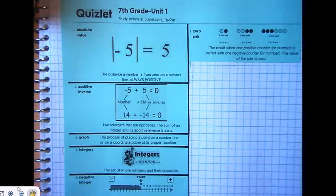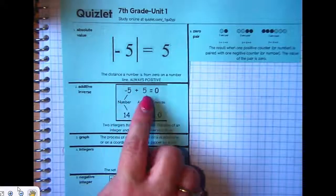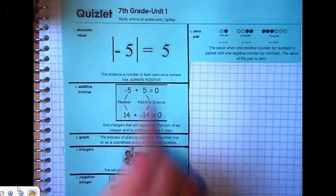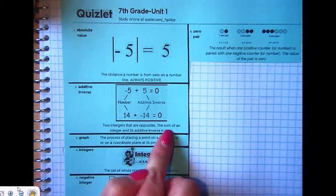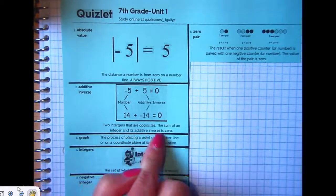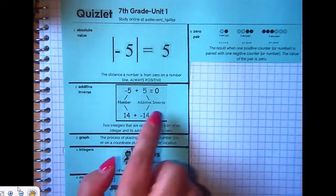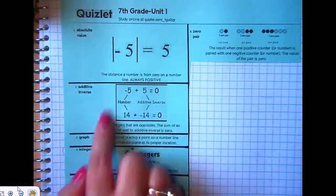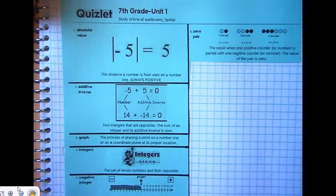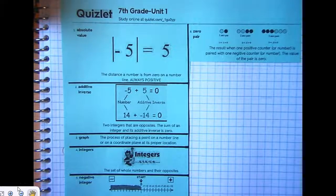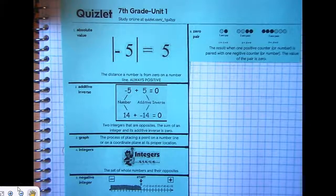Additive inverse. Negative 5 and positive 5 are additive inverses. Two integers that are opposites. The sum of an integer and its additive inverse is 0. This might be a vocabulary word that you need on your homework this week. Do you remember that question that says three vocabulary terms? This might help you.